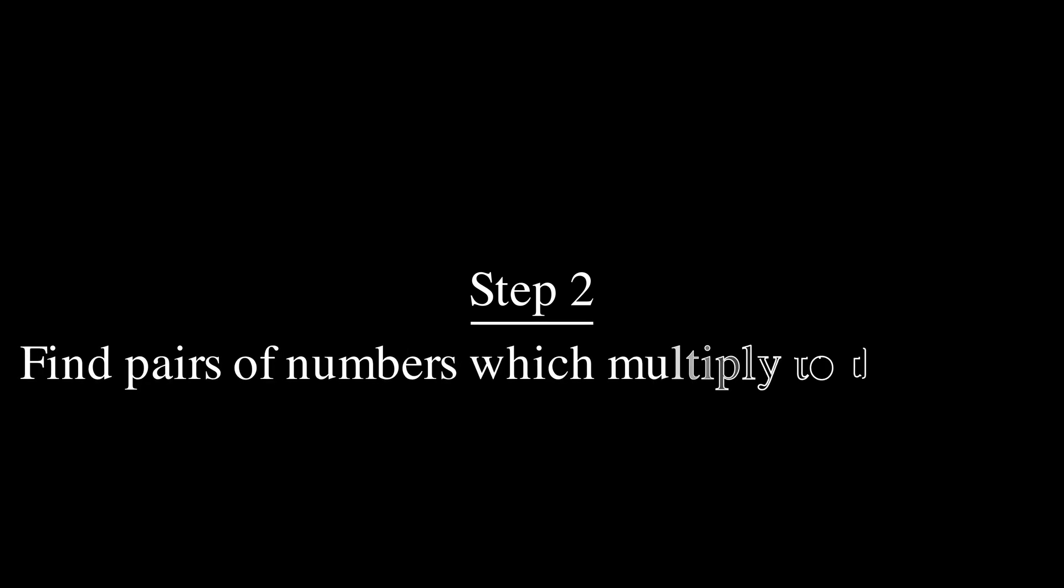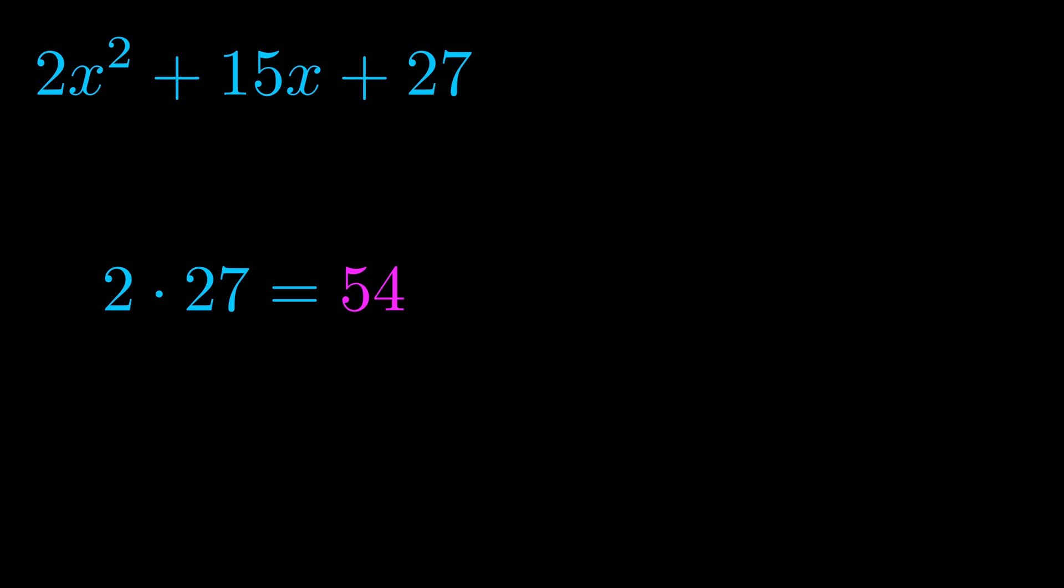Step two is to try to find all of the pairs which multiply to this number. Now it turns out you don't really need to find all of them, but go ahead and write down as many numbers as you can that multiply to the magenta value for now. Pause the video and resume when you're ready to continue.